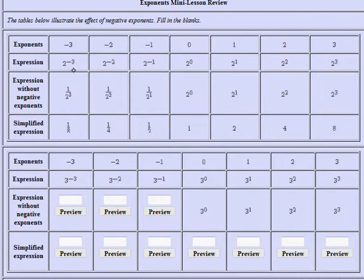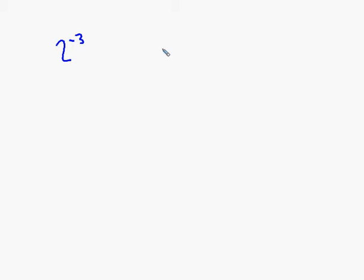I want to look at this problem 2 to the minus 3 and compare it to the more general property. There is a property of exponents that says if you have a number — a in general, in this case it's 2 — raised to some number, I'm going to write minus n here. So in my example, a is 2 and n is 3, and you can rewrite this expression without using a negative exponent.